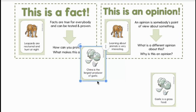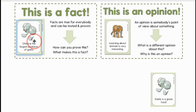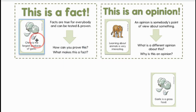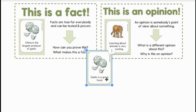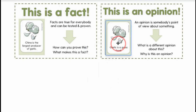China is the largest producer of garlic. This is also a fact because we can check the numbers and we would see that China makes the most garlic. And the final one says: garlic is a gross food. I'm not a big fan of garlic so this is true for me, but maybe someone really likes garlic — so this is an opinion.